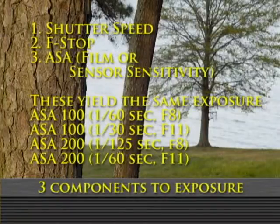There are three components to exposure: shutter speed, f-stop, and ASA, which is the film or sensor sensitivity. On most digital cameras you can adjust the ASA. 100 is a good default value that gives you nice, clean, crisp images, but if you're shooting sports and need faster shutter speeds, you can crank that up. You can play with the different settings and still get properly exposed images.